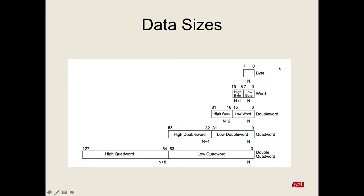Data sizes: a byte is 8 bits; two bytes is a word; two words is a double word; two double words is a quad word, and so on. I usually think in terms of bytes, but you do have to be careful when you're moving things around.